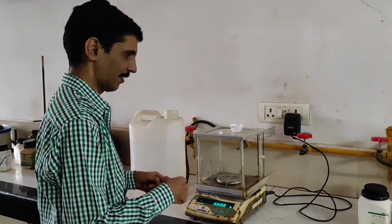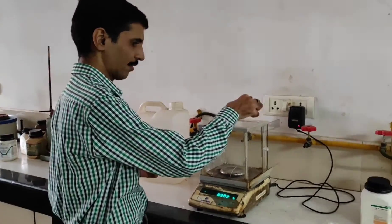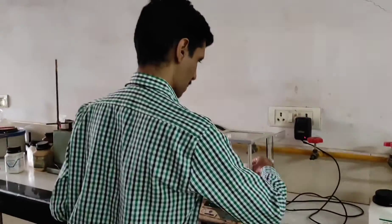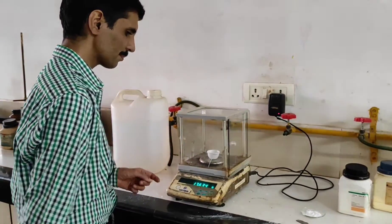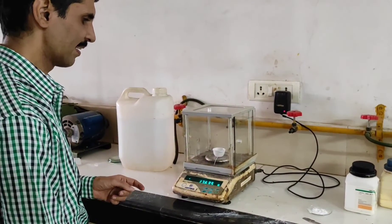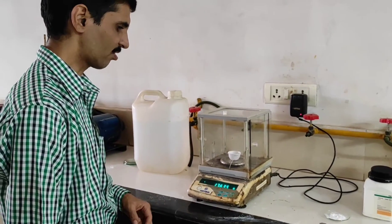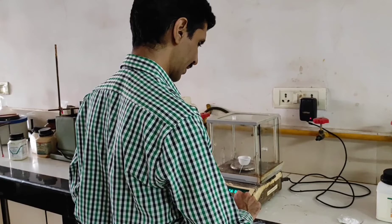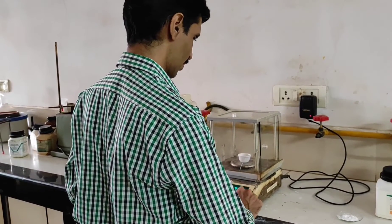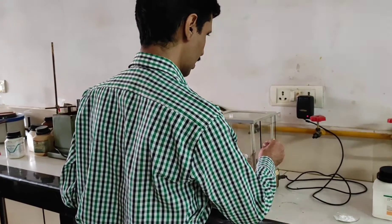So you can see the indicator is 0.0. So we first take the weight of the empty crucible. So the crucible weight is 17.635. Now I press the button tare, so it will show 0.0.